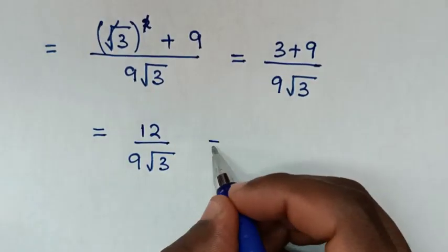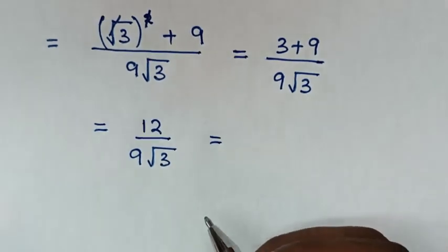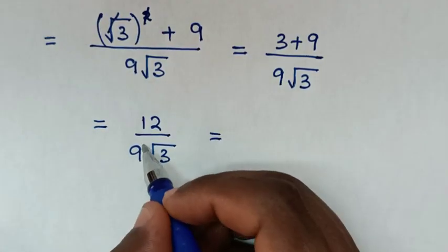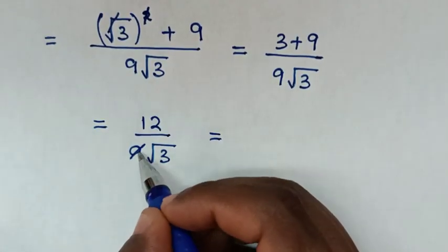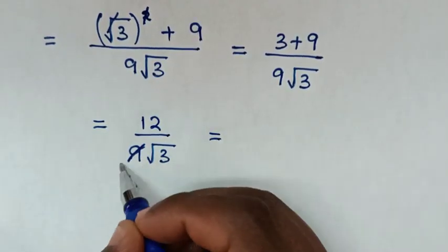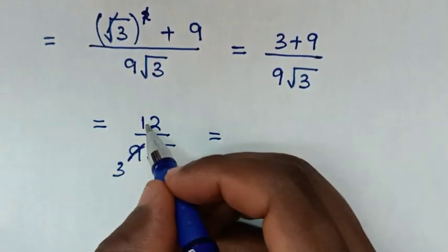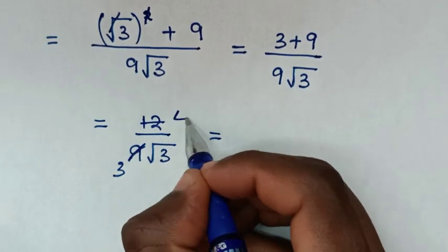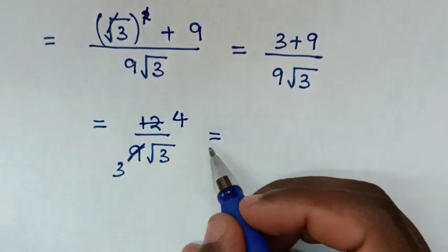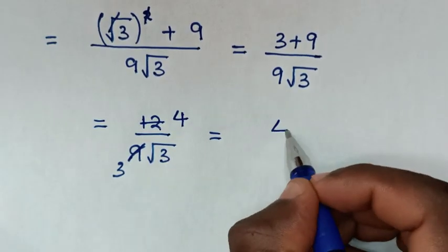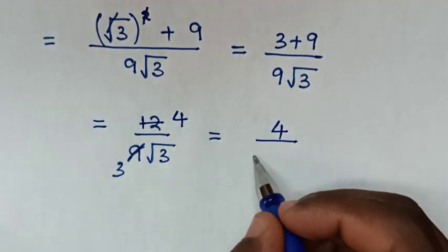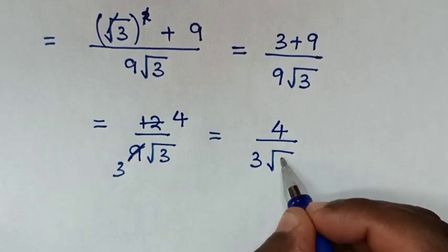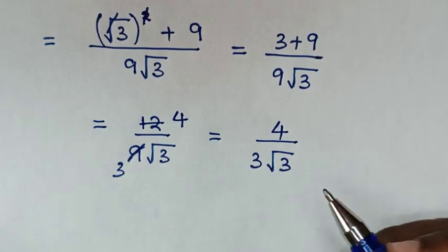Then it will be equal to — to simplify, 9 divided by 3 is 3 and 12 divided by 3 is 4. So it will be 4 over 3 square root of 3.